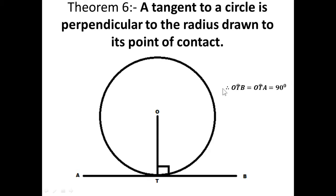So angle OTB and angle OTA are both equal to 90 degrees. That is what this theorem is saying: any time you have a tangent to a circle and a radius drawn from the center to that point of contact, the angle between them is 90 degrees.